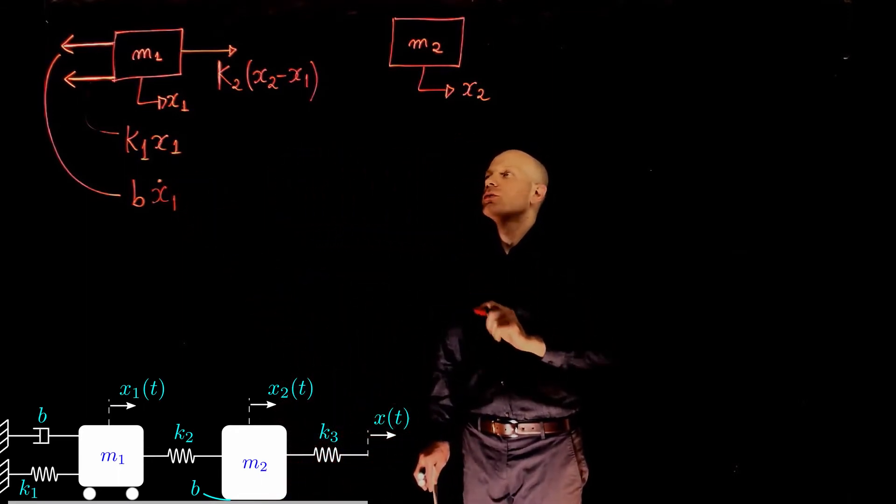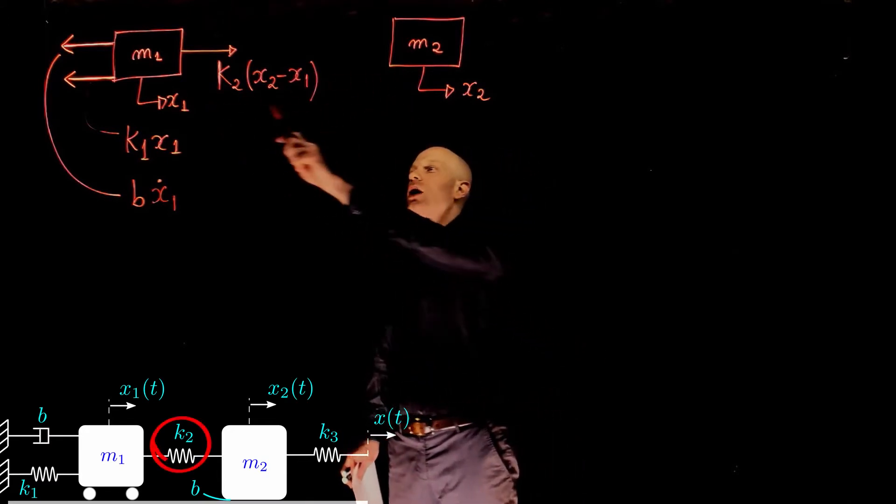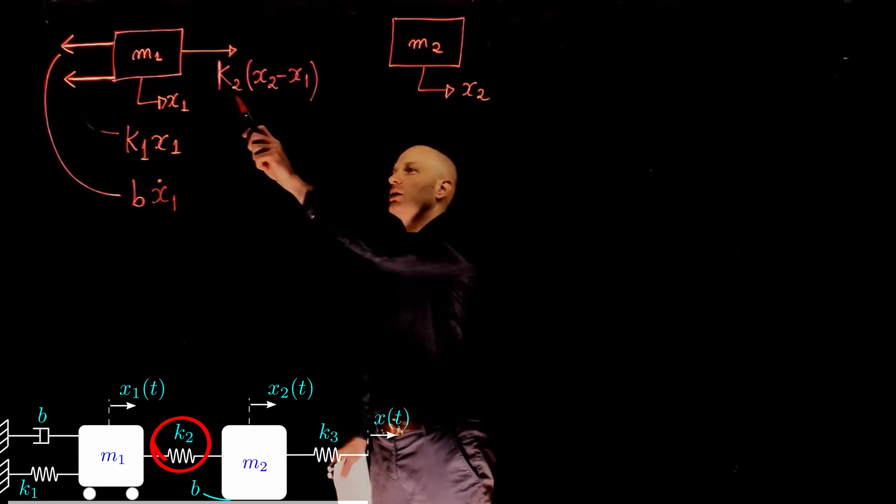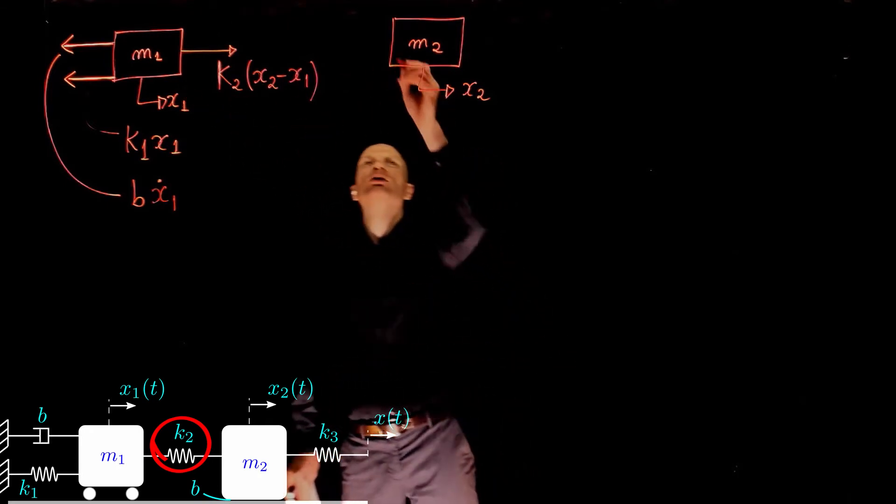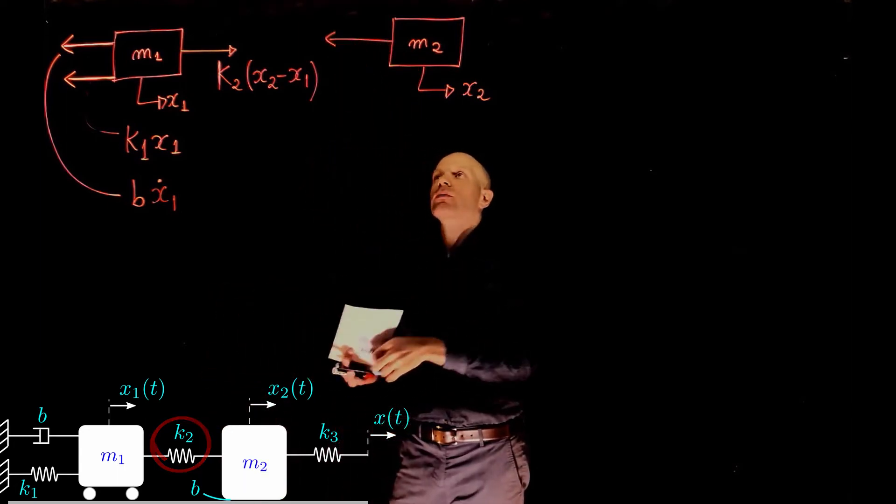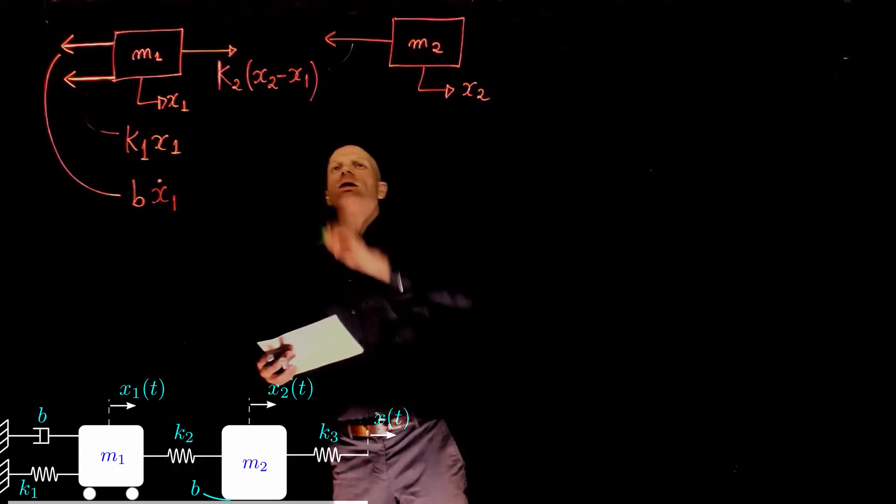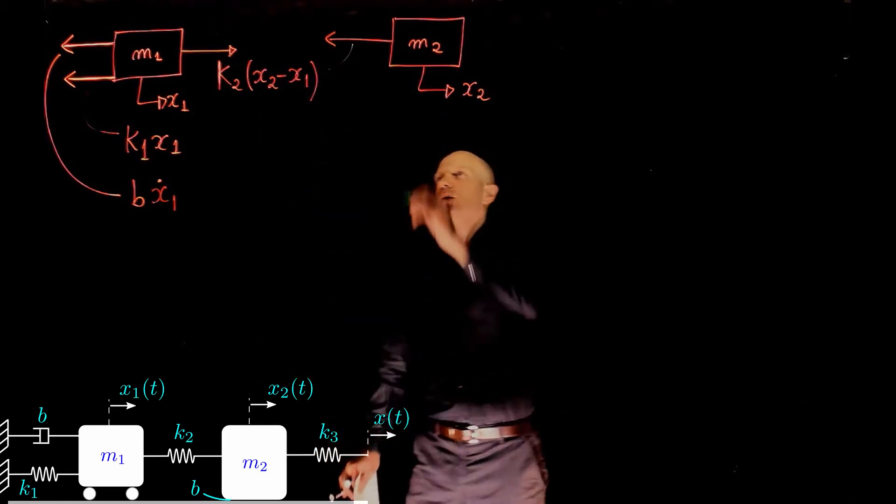For mass m2, we can note that the spring that is connected to mass m1 and m2 applies this force to mass m1, and therefore it must apply the same force to mass m2, but in the opposite direction. And here we have the magnitude. The magnitude is exactly the same as k2 times x2 minus x1.